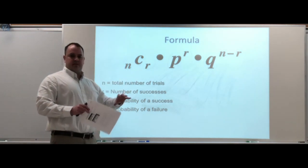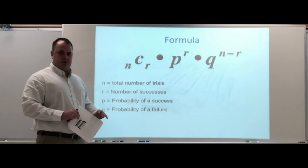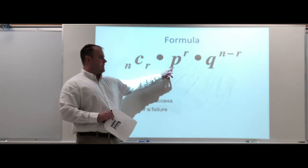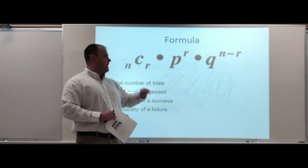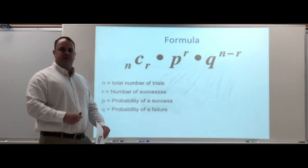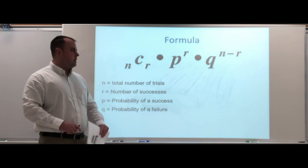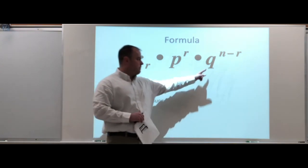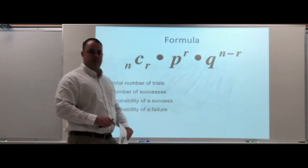Quick review for the formula: we have the first part which takes care of all the successes and failures and how many ways they can be arranged. We have the count for how many successes, the probability of success, and the probability of failure for all the situations.